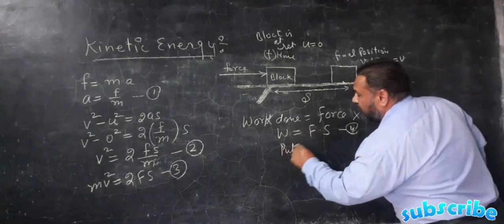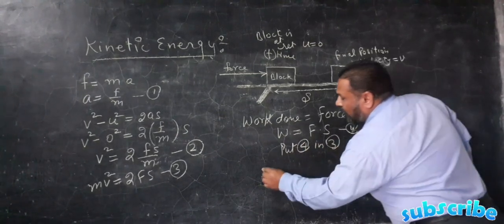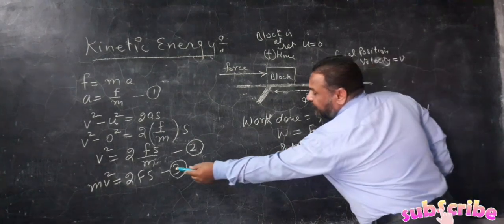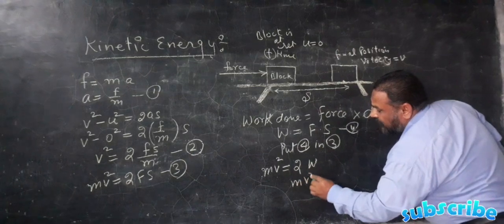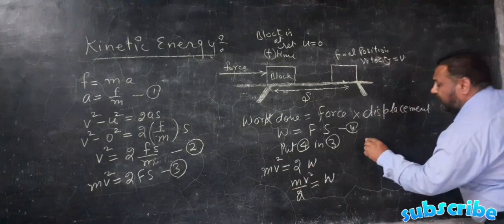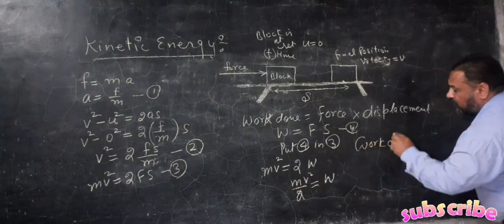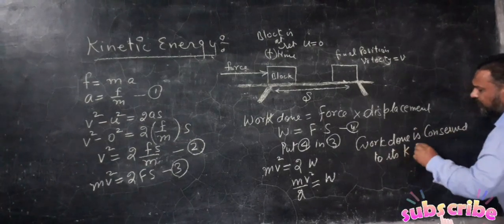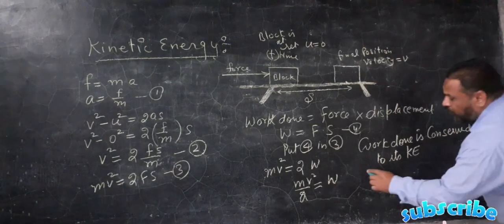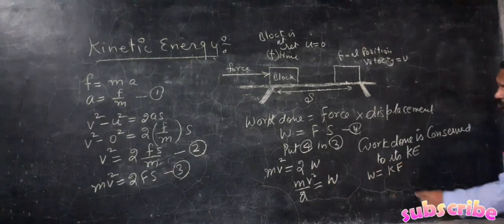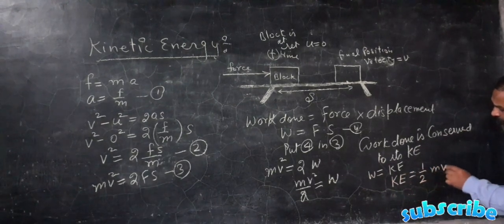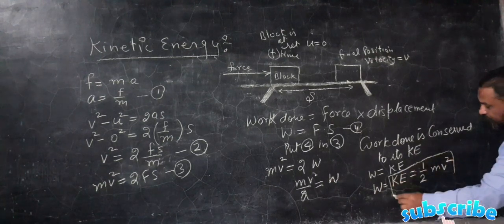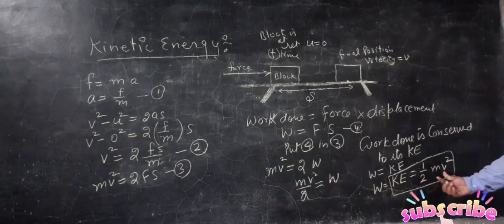Substituting FS = W into the equation mv² = 2FS, we get mv² = 2W, which gives us W = mv²/2. Work done is converted to kinetic energy, so W = KE. Therefore, Kinetic Energy = ½mv². This is the relationship between kinetic energy, mass, and velocity squared.